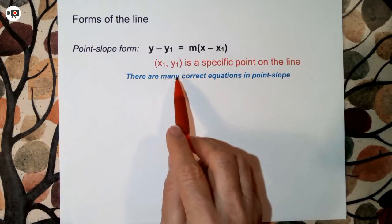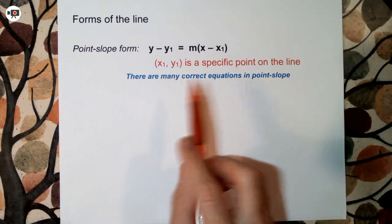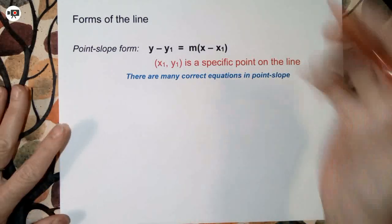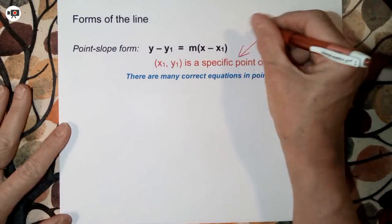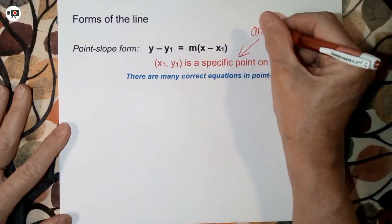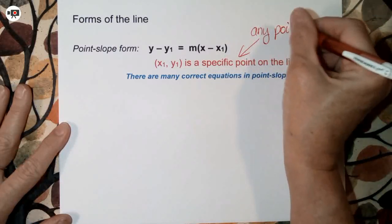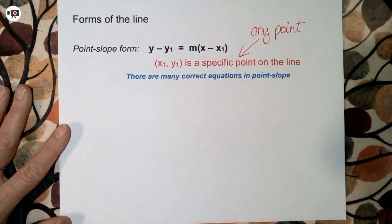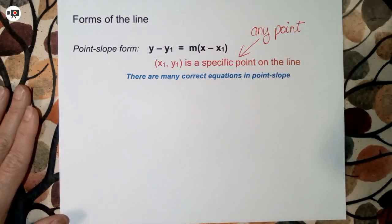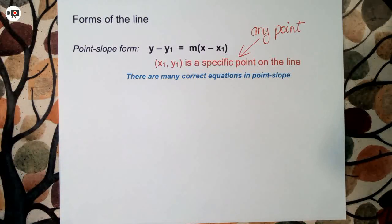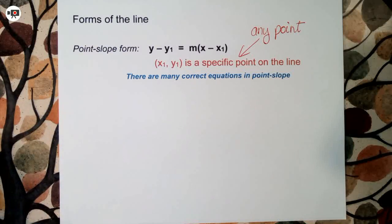x-sub-1, y-sub-1 is a specific point on the line — any point on the line. It does not matter; all the points work. Because this works for every point on the line, there are an infinite number of correct equations in point-slope form. There's not just one.